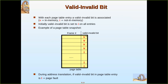After loading pages one by one into main memory in their respective frames, those frame numbers are updated in the page table and the valid-invalid bit is changed to V, indicating the page is now present in main memory. During address translation, if the valid-invalid bit in the page table entry is I, it means a page fault — the page is not present — and the operating system demands that page from secondary storage.